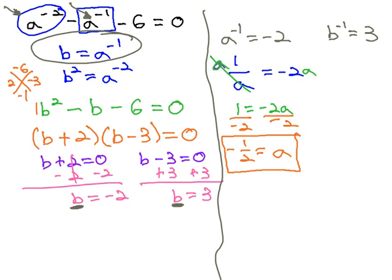We can do much the same thing on the other one where b to the negative 1 equals 3. b to the negative 1 is 1 over b equals 3. And again, we clear the denominator by multiplying both sides by b, so that 1 equals 3b. And finally, divide both sides by 3.